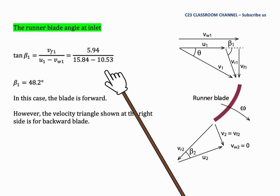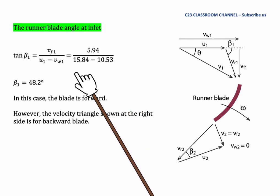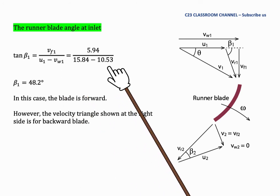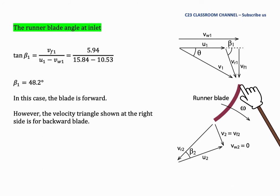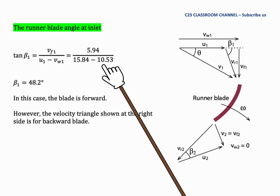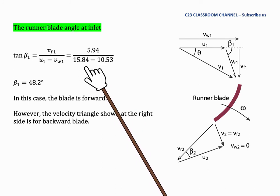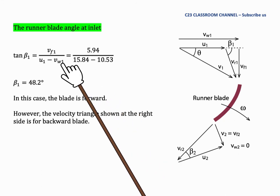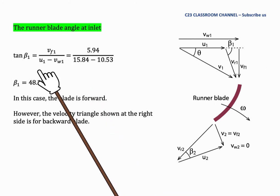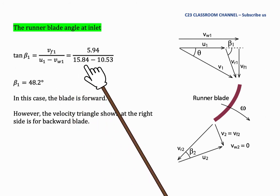When we substitute the values, we find that the value of U1 is bigger than the value of Vw1 here. This means the blade shape is not a backward one, it should be a forward blade type. It is okay not to change our velocity triangle here, but in our calculation we must subtract the bigger value from the smaller value.